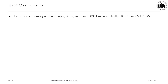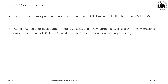The 8751 microcontroller has the same memory, interrupts, and timers as the 8051 microcontroller, but it has a UVEPROM. Using the 8751 chip for development requires access to a PROM burner, because UVEPROM is used as the ROM memory. We also require a UVEPROM eraser to erase the contents of the UVEPROM inside the 8751 chip before it can be programmed again.